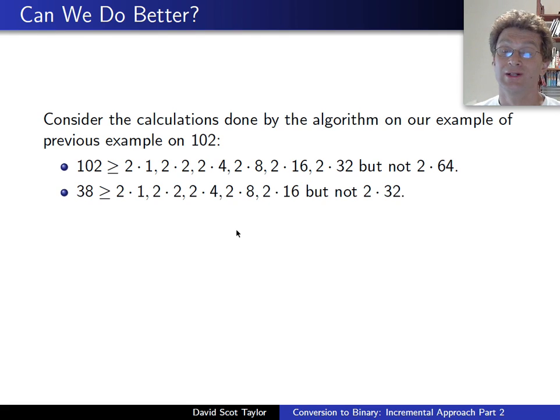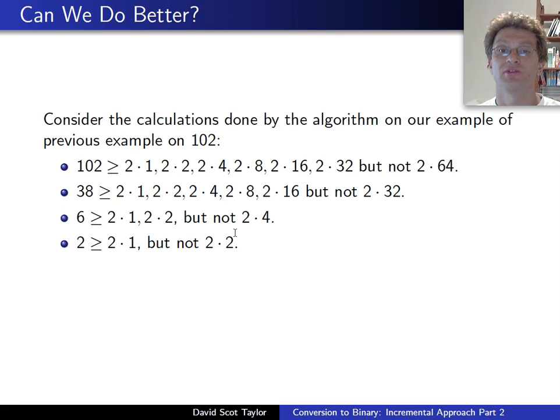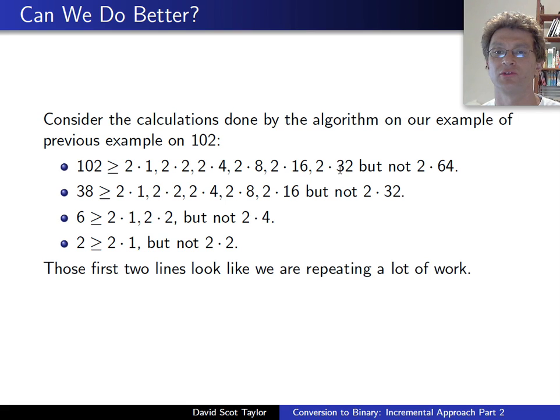Except, later on, when you have this remainder of 38, you basically do what looks like a lot of same exact work again: 2 times 1, 2 times 2, 2 times 4, 2 times 8, 2 times 16, but not 2 times 32. So doing that work once is what it is, but doing it twice seems bad, seems wasteful. So what we want to do is not repeat work.